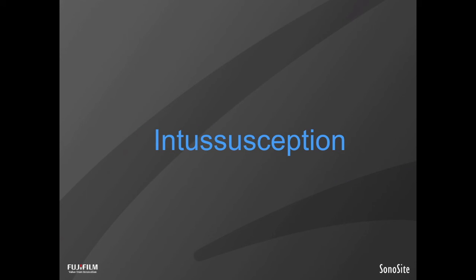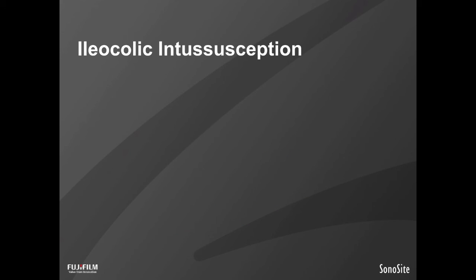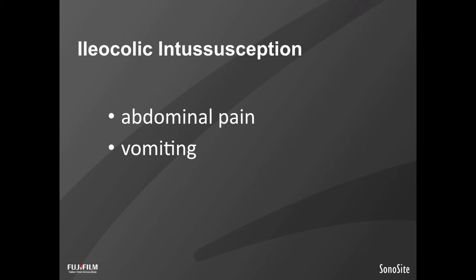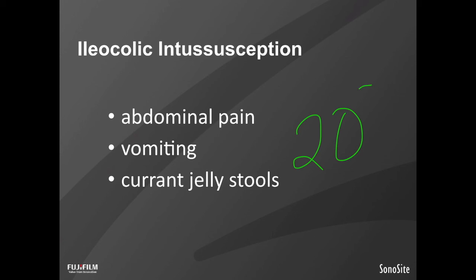First, let's talk about intussusception. I want you to remember 2.5 — I'm going to define it as we make our way through this section. We're discussing ileocolic intussusception. The classic presentation is the child with intermittent crampy abdominal pain, vomiting, and currant jelly stools. However, this classic triad only occurs in about 20% of patients, so we must have a high index of suspicion. Children will present with any of these symptoms, and using portable ultrasound, we can investigate nicely for ileocolic intussusception.